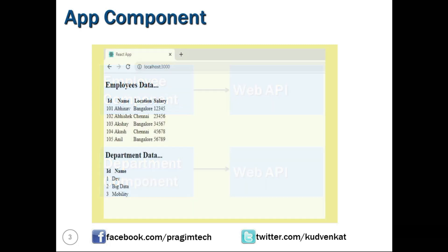When we render our app component to the DOM it looks this way. In order to achieve this, we might have written the same code in both the employee component as well as the department component. If we want to reuse the code between two different components, we were able to handle this by creating render props and higher-order components in the case of class components. Let's see how we handle this in the case of function components.